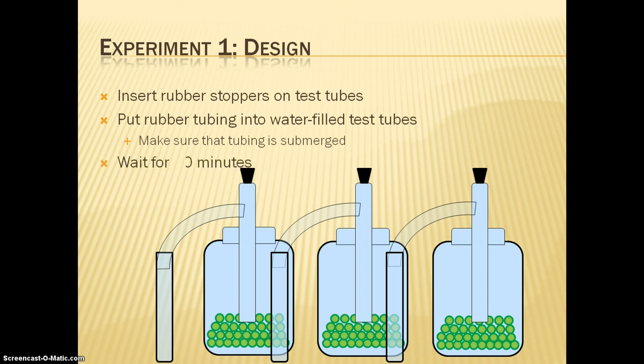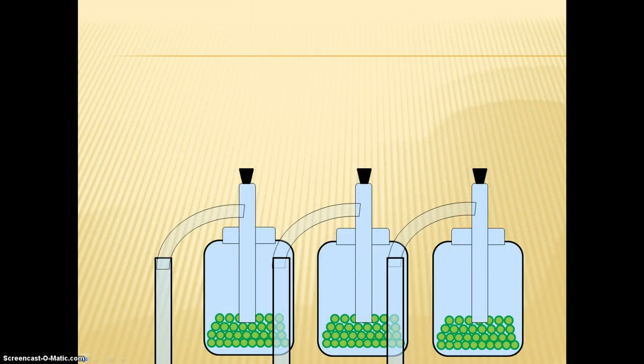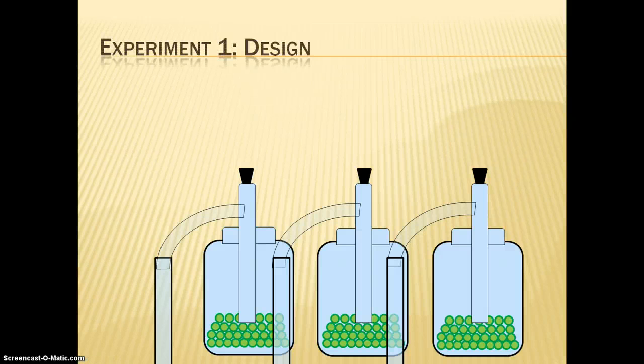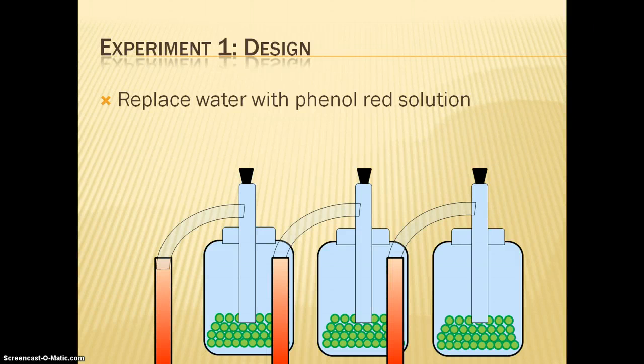Now we can wait for 60 minutes, and we have shown you a picture of our experiment at this point. After the hour has passed, the water in the test tube should be quickly replaced with the phenol red dye. Now, this makes the CO2 visible as yellow carbonic acid.